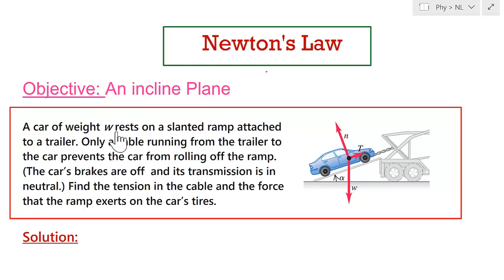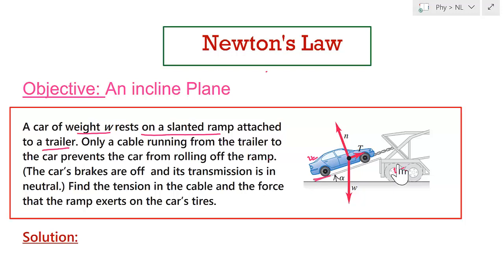This problem says: a car of weight W rests on a slanted ramp attached to a trailer. This is the trailer, this is the car, and this is the ramp. The car is resting on this ramp, which is attached to a trailer by a cable. Only a cable running from the trailer to the car prevents the car from rolling off the ramp — that is the only thing supporting the car.